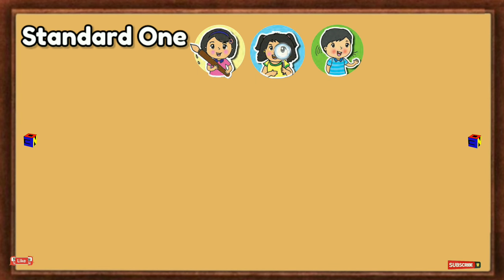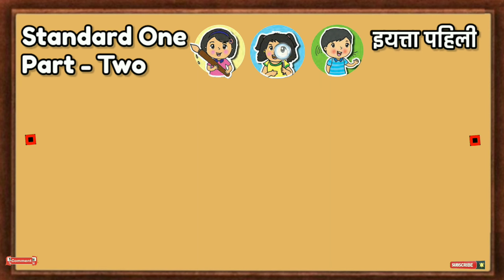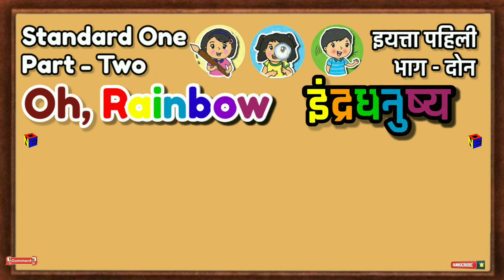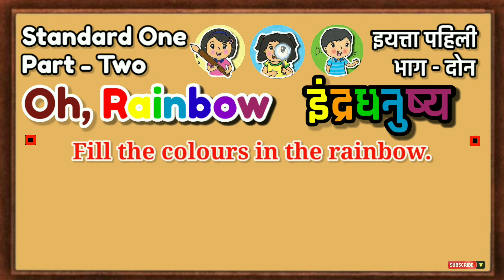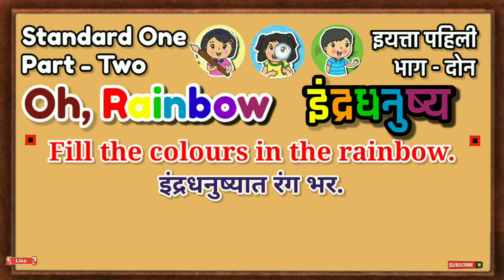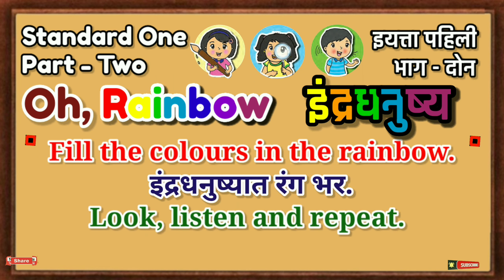Standard 1, Part 2. Yatta Pahili. Bhagdol. Oh, Rainbow. Indra Dhanushya. Fill the colors in the rainbow. Indra Dhanushya Trangabhar. Look, listen and repeat.